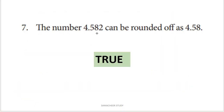Next statement: the number 4.582 can be rounded off as 4.58. This involves approximation. Since the digit after 8 is 2, which is less than 5, we round down and keep 4.58. So this statement is true.